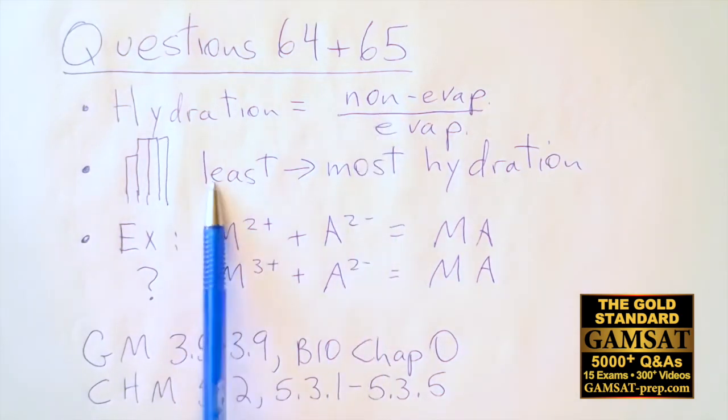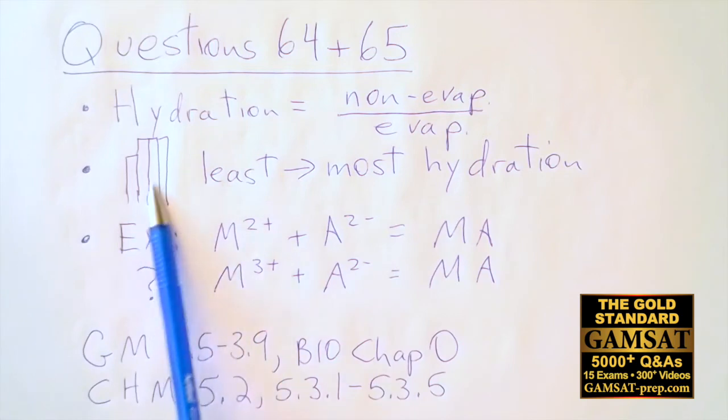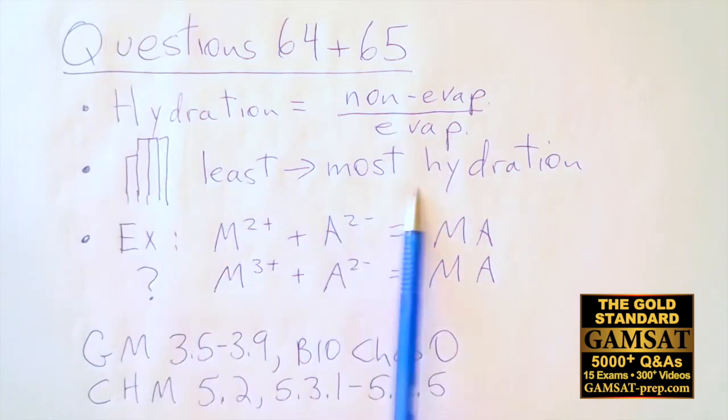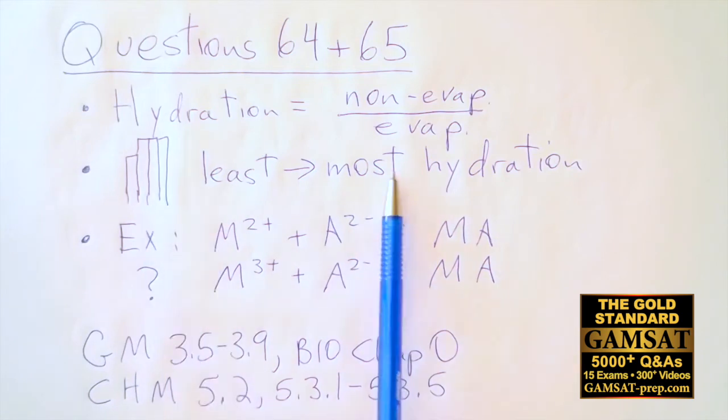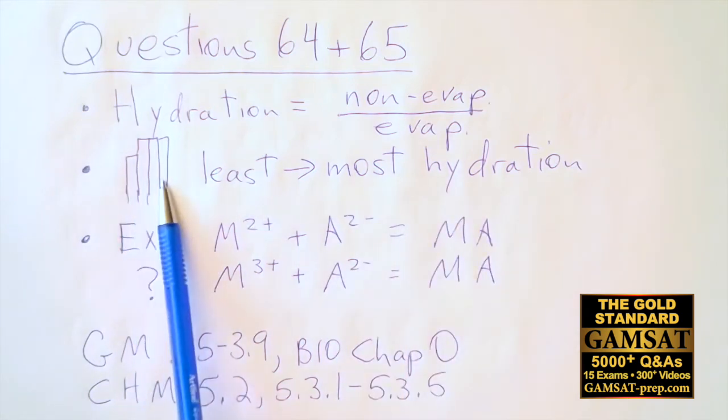Non-evap starts at zero, so the first one has the least hydration. Then non-evap ends up going up higher, so therefore the last histograms have the most hydration. So it goes from least to most in each instance with the different material that's being used.